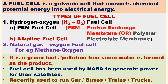The characteristics and uses of fuel cells: it is a green fuel and pollution-free, since water is formed as the product. Fuel cells have been used by NASA to generate power for their satellites. Recently, fuel cells — especially hydrogen-oxygen fuel cells — are used to run cars, buses, trains, and trucks.